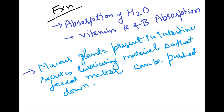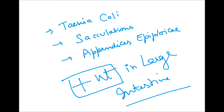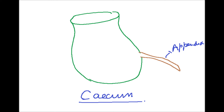Mucous glands present in the intestine secrete lubricating material so that fecal material can be pushed down. Tenia coli, haustra, and appendices epiploicae are present in the large intestine, which are usually absent in the small intestine.